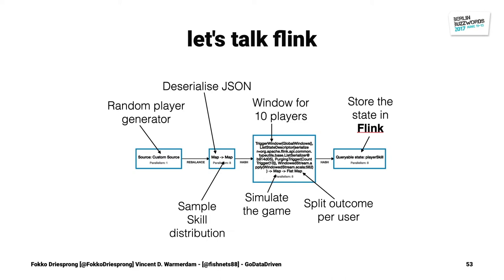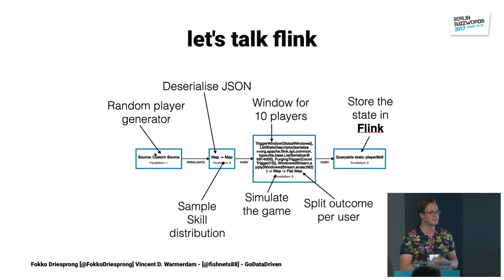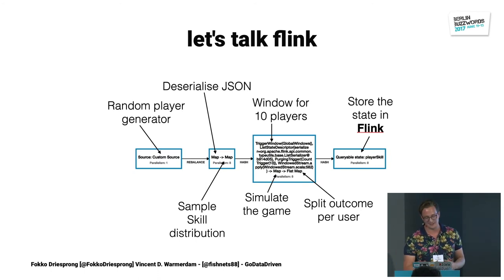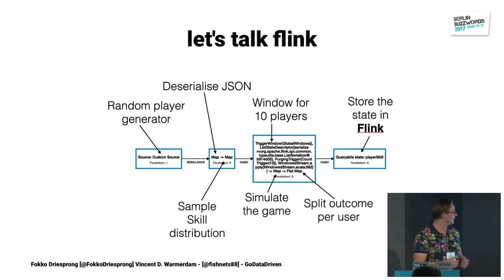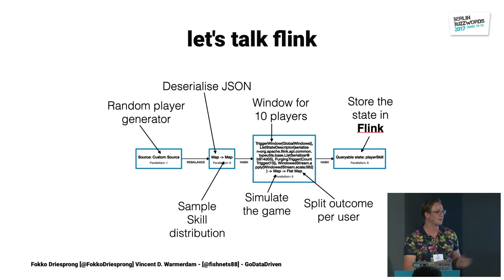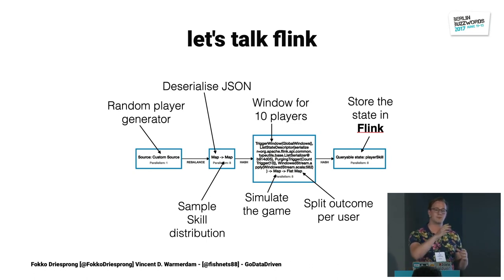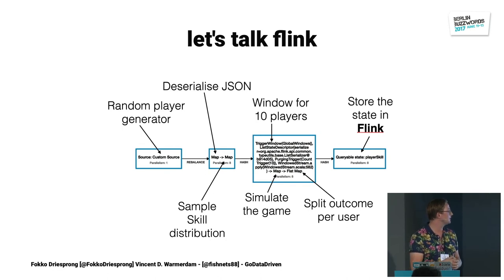Let's talk Flink and see how we did it. We wrote a function that generates random players applying for the queue. Next, we feed them as JSON. Then we deserialize them to get a case class object. The next step is to sample the skill distribution: if we have a skill distribution for this player in the state, we use that; otherwise, we start with an average skill distribution with high uncertainty, so the player plays against average players. Next, we do the window function — we get 10 players in a fixed-length window, and when there are 10 players, it goes to the next part of the pipeline and simulates the game. After that, we split the game into individual users to do the mapping from the team average to individual players.